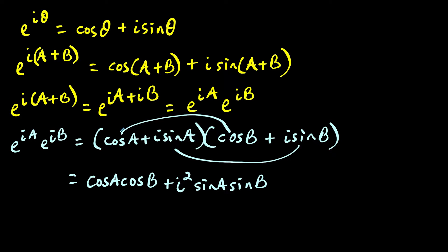And then now I'm going to distribute cosine a to the last term. So I'll have plus i times cosine a times sine b plus, and then the last thing to distribute is i sine a to cosine b. We'll have i times, and I could write this as cosine b times sine a.